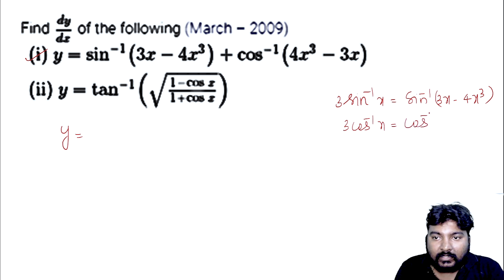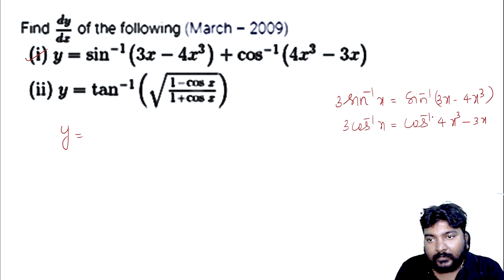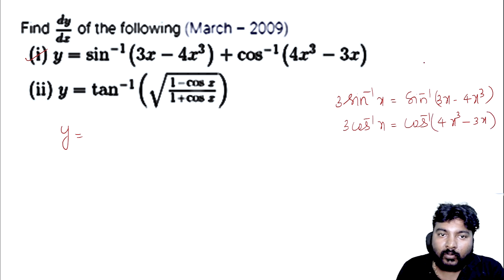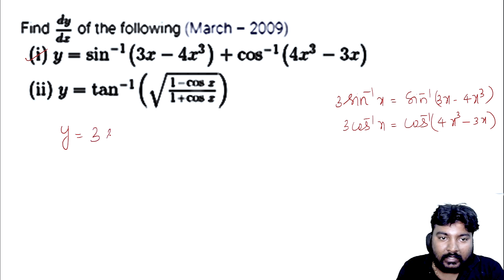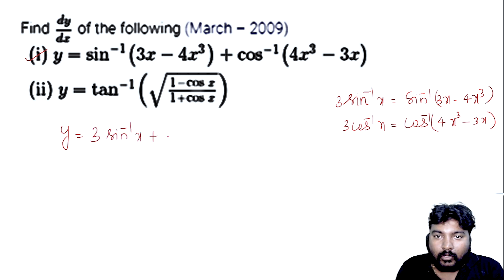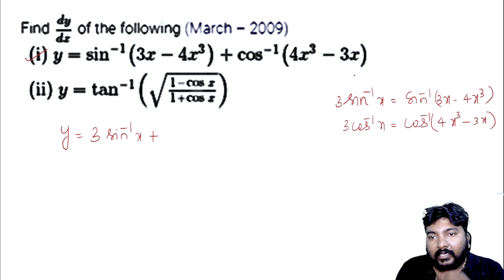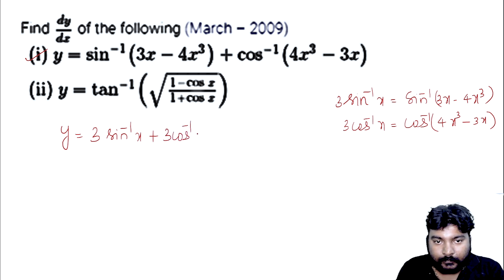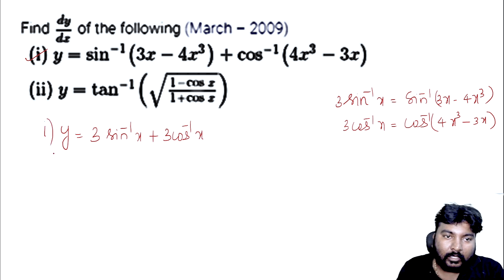Now the next problem: y equals cos⁻¹(4x³ minus 3x) plus sin⁻¹(3x minus 4x³). I will substitute using inverse trig identities: sin⁻¹(3x minus 4x³) gives 3 sin⁻¹x, and cos⁻¹(4x³ minus 3x) gives 3 cos⁻¹x.